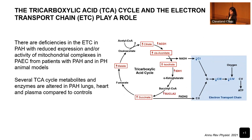Now to the TCA cycle and electron transport chain — where most of the cell's energy is produced, in the mitochondria, where most ATP is produced through cellular respiration. In pulmonary hypertension, there's a reduction in the expression of some complexes of the electron transport chain, and several metabolites and enzymes in the TCA cycle are deranged. There's increased malate, citrate, isocitrate, and succinate, and several enzymes are upregulated, for example IDH1.